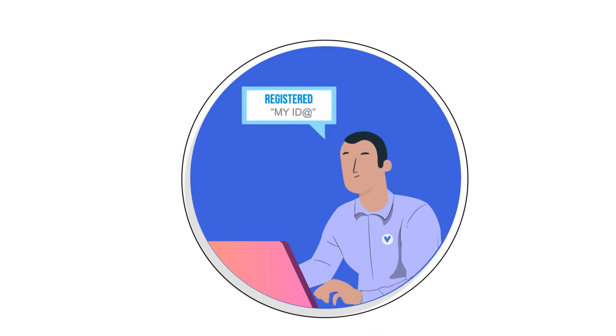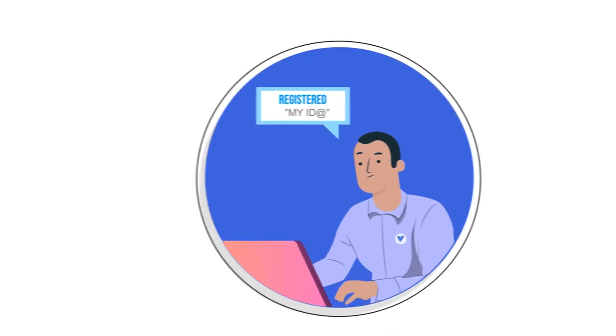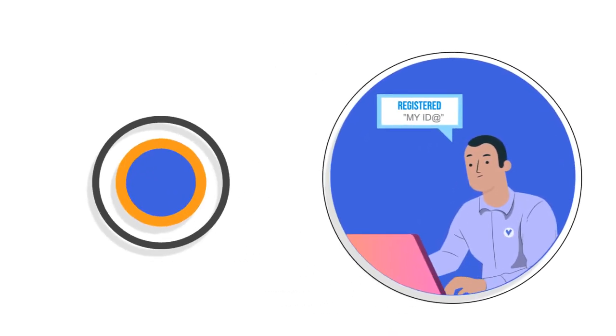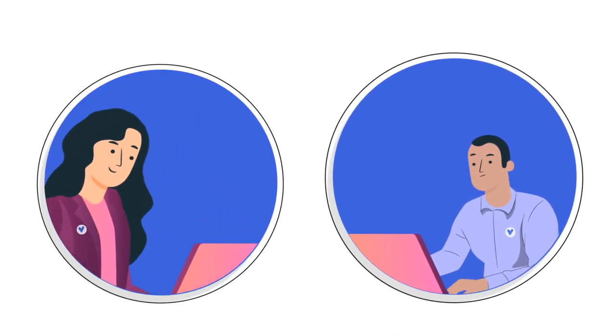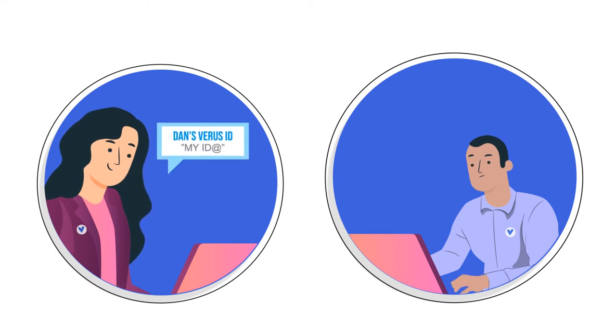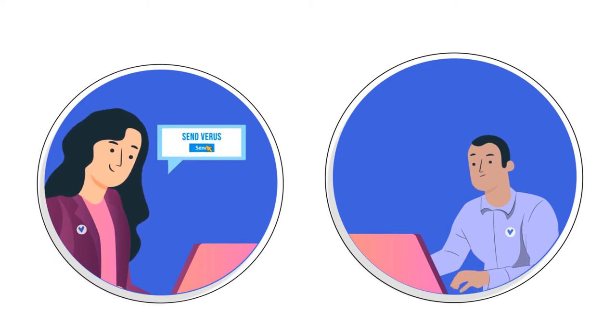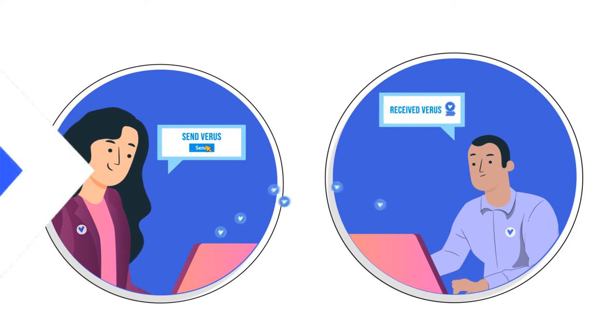For instance, if Dan has registered a Veris ID and wants to receive a payment from Mary, all Mary needs is his Veris ID. Mary can send crypto to this ID, just like an email.